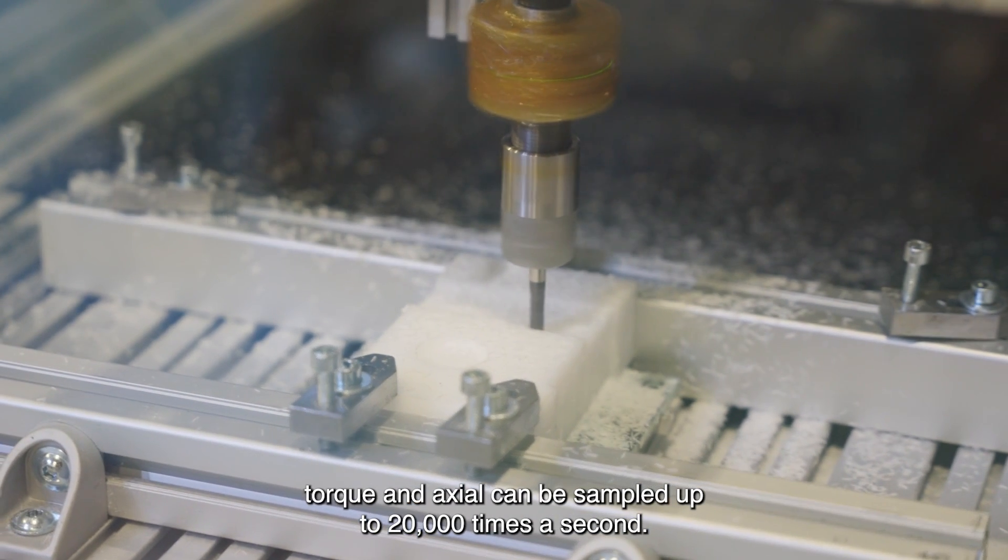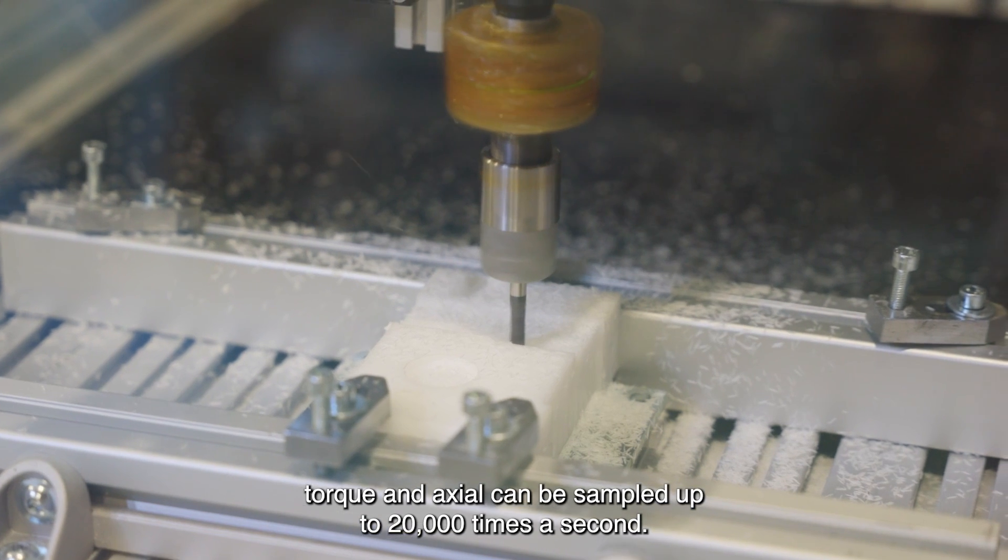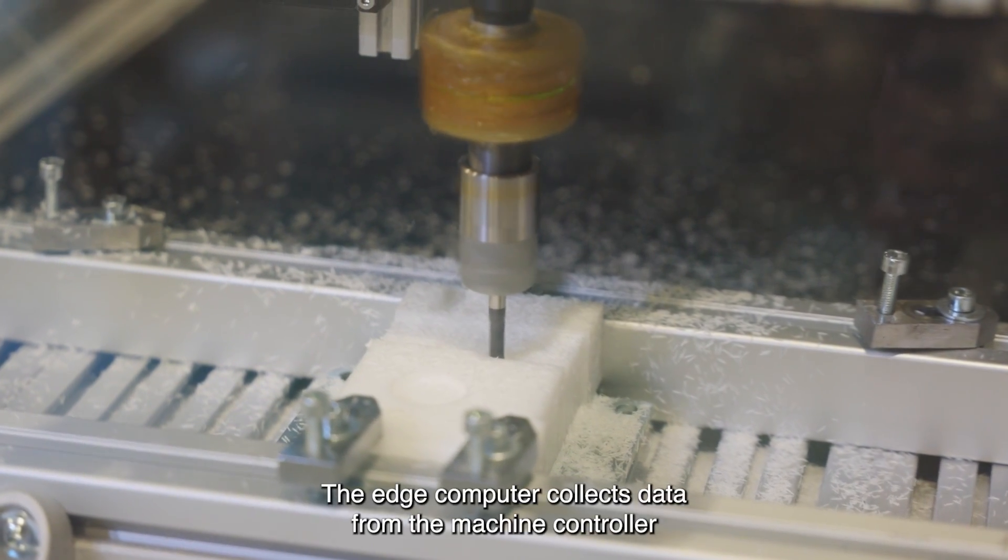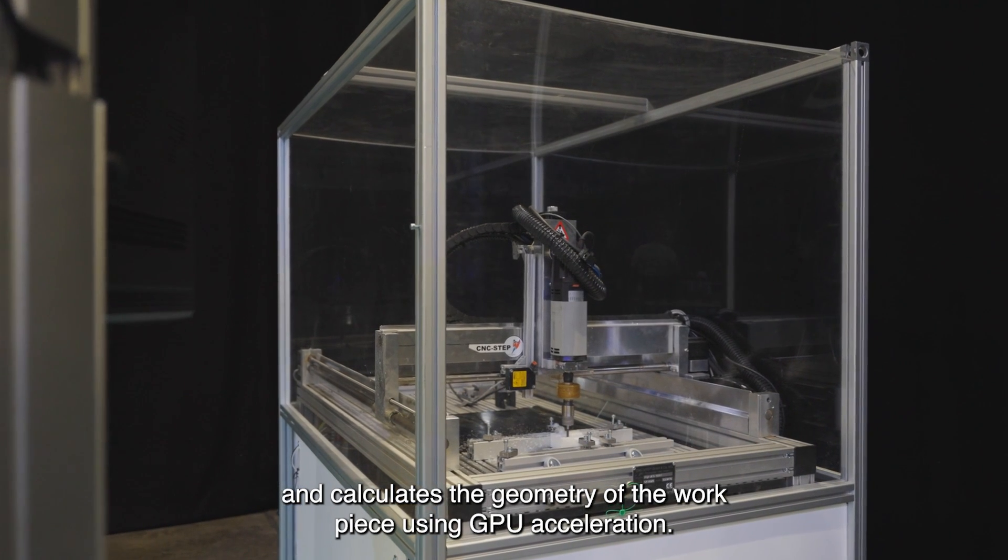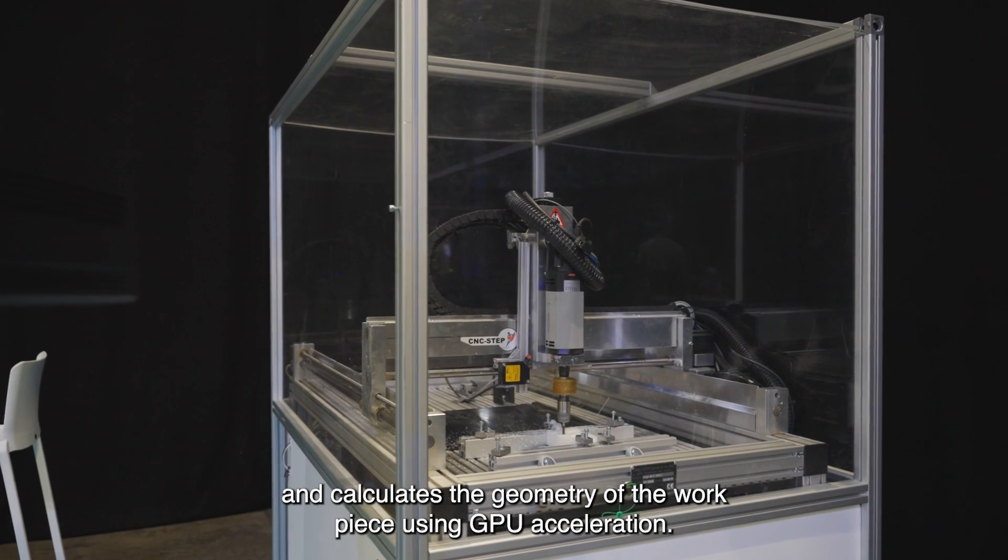torque and axial can be sampled up to 20,000 times a second. The edge computer collects data from the machine controller and calculates the geometry of the workpiece using GPU acceleration.